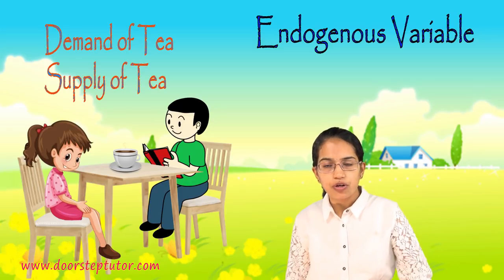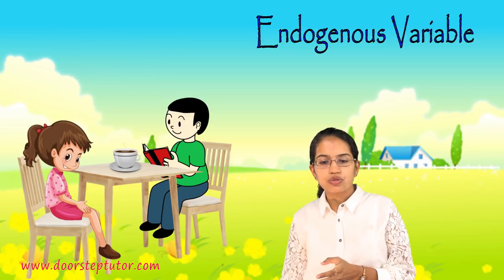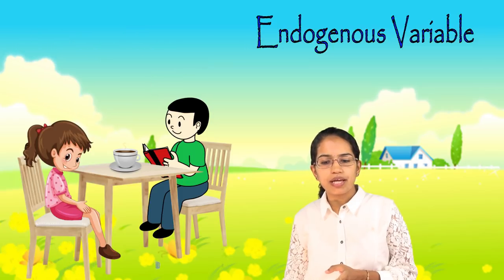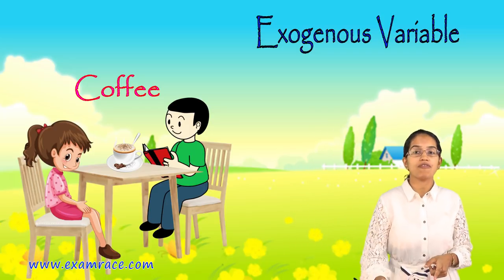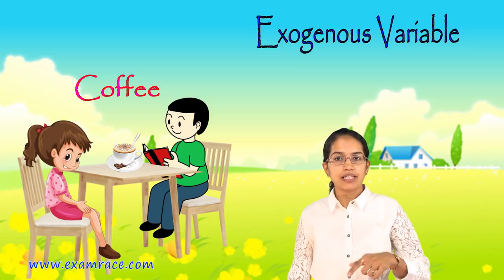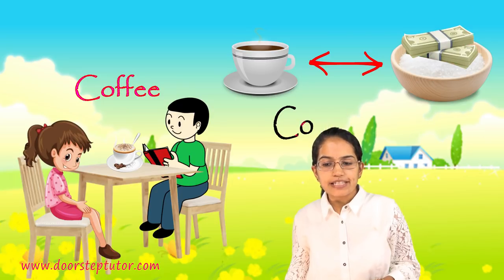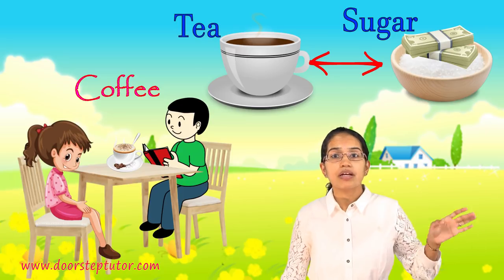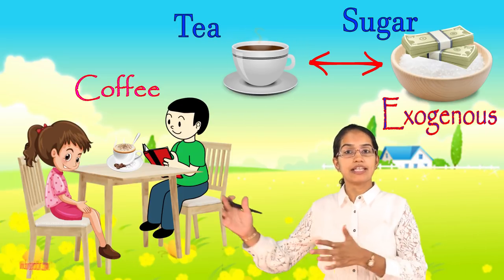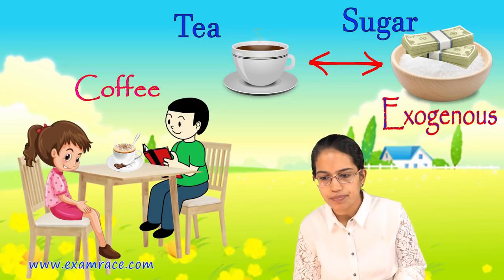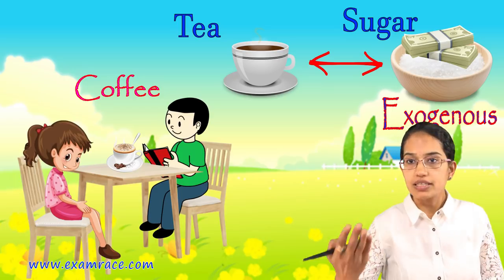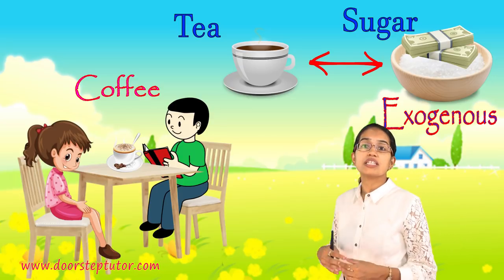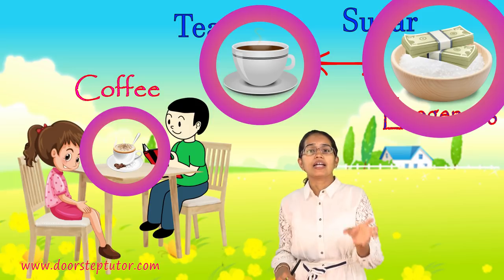The endogenous variables here are the demand and supply of tea. You also have substitutes — for tea, that would be coffee. Coffee is an exogenous variable because changes in coffee production or demand affect tea but come from outside the model. Similarly, complements like sugar are exogenous: when the price of sugar varies it affects demand for tea, but sugar is outside the tea model. Consumer preferences and the number of buyers are also exogenous variables.